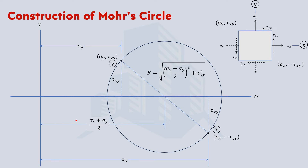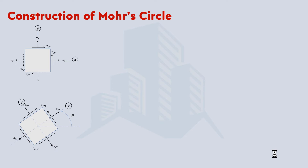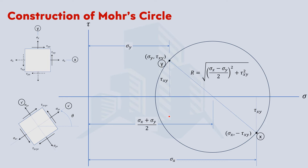This confirms the equation for the radius r that we derived earlier — you can verify it graphically using trigonometric relationships and you will obtain the same radius expression. This proves the circle equation. Next, let's discuss how we can calculate normal and shear stress on any transformed plane. Given the original plane, if it is transformed to an x'-y' plane rotated by theta counterclockwise, we can represent this on the Mohr's circle.